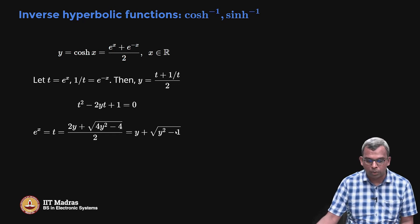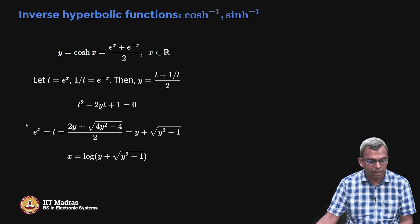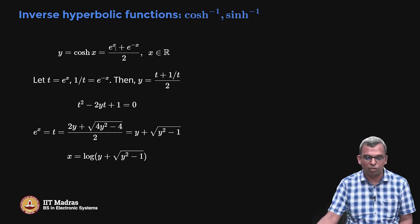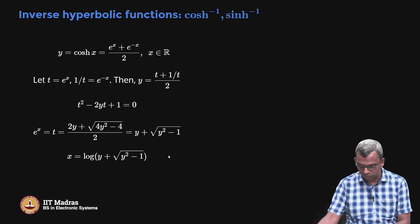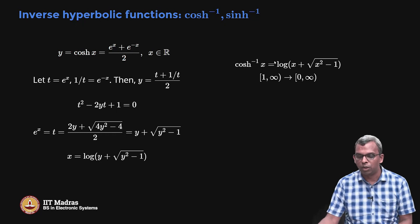Once t = e^x, you solve the quadratic and get e^x = y + √(y² - 1). Since y ≥ 1, y² - 1 is always positive. Taking the positive square root, x = log(y + √(y² - 1)). So cosh⁻¹(x) = log(x + √(x² - 1)), where x ∈ [1, ∞) and the range is [0, ∞). You can also take the negative square root.